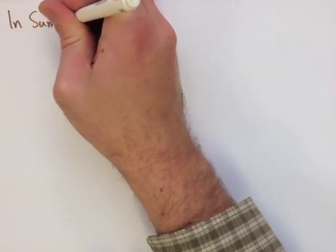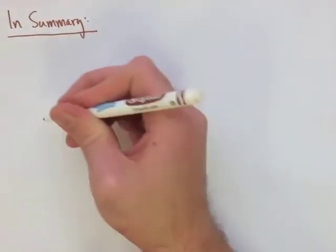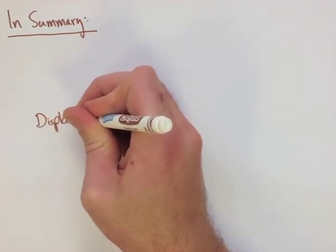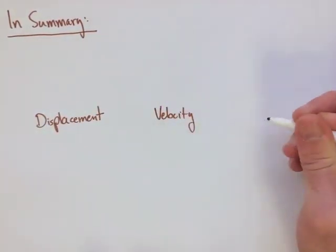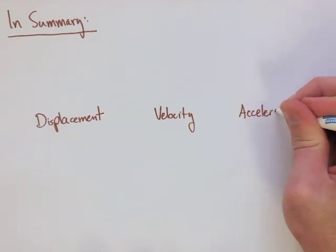Now that we've looked at all of these three graphs, we can make a quick summary using displacement, velocity, and acceleration. All of these graphs would be relative to time.